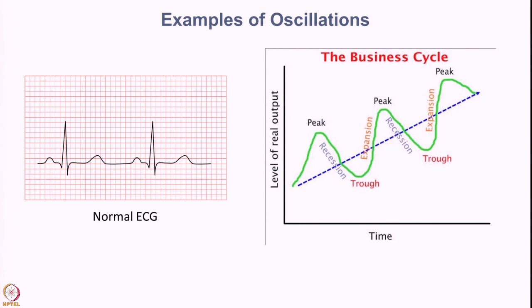On the right side you see an example of oscillations in business systems. Most business systems are characterized by growth which peaks and is then followed by a recession resulting in a trough. Then the business expands again and reaches a second peak, and so on. In this example there is also an overall growth within the system — every subsequent peak is at a higher level than the previous peak.